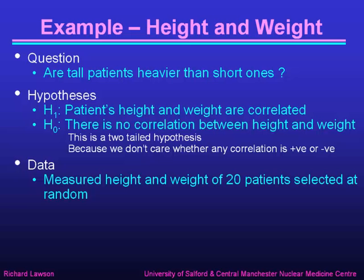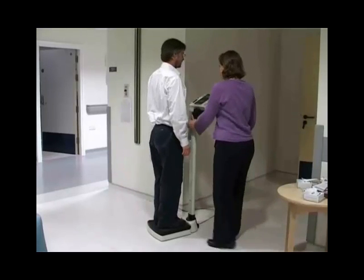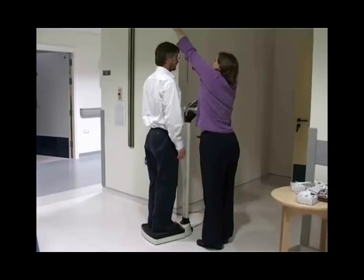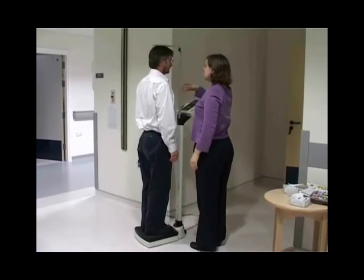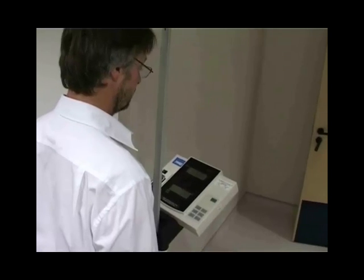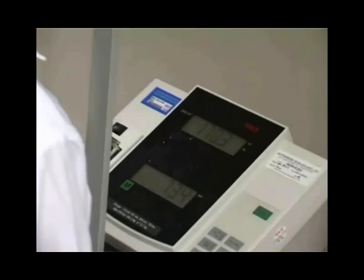The data we have are the measured height and weight of 20 patients selected at random from those attending our department. It's very easy to measure the height and weight of our patients. Here we've got a very convenient set of scales with a built-in height measure, and it gives a digital readout of the height and weight — in this case 170 cm and 73 kg.